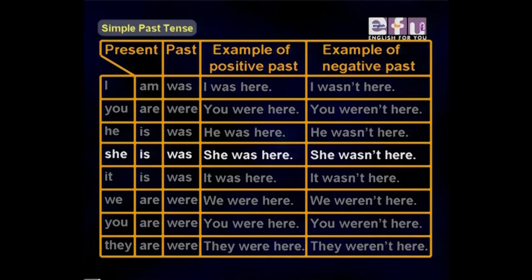With she, she is, she was, she was here, she wasn't here. With it, it is, it was, it was here, it wasn't here. We, we are, we were, we were here, we weren't here.